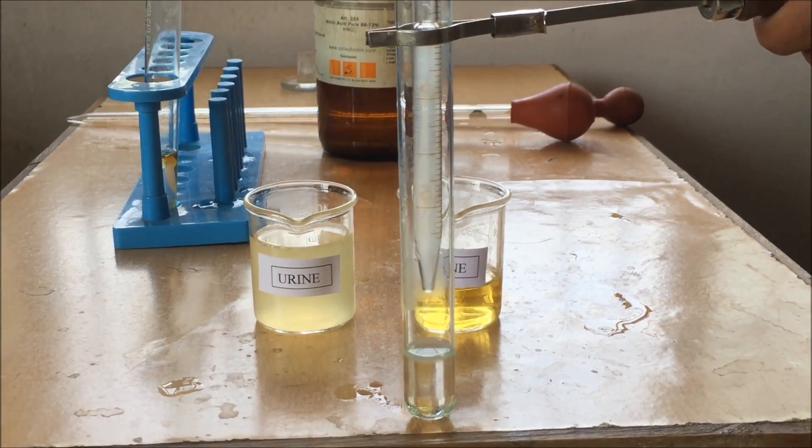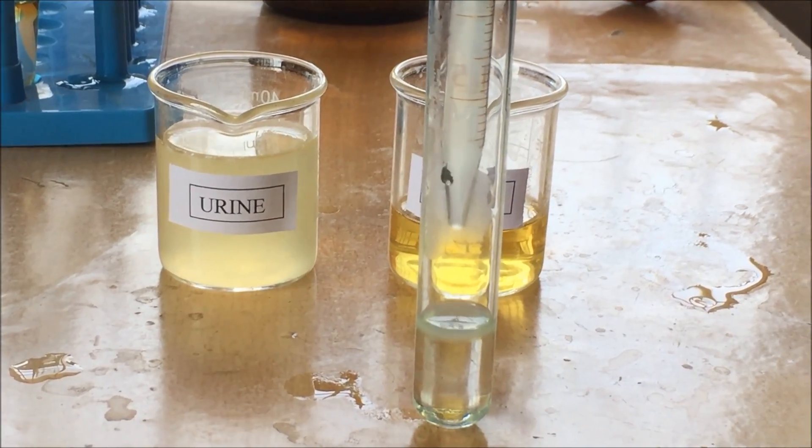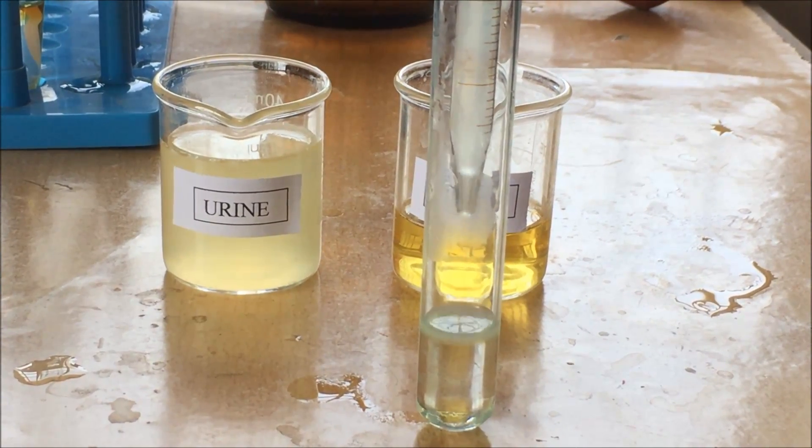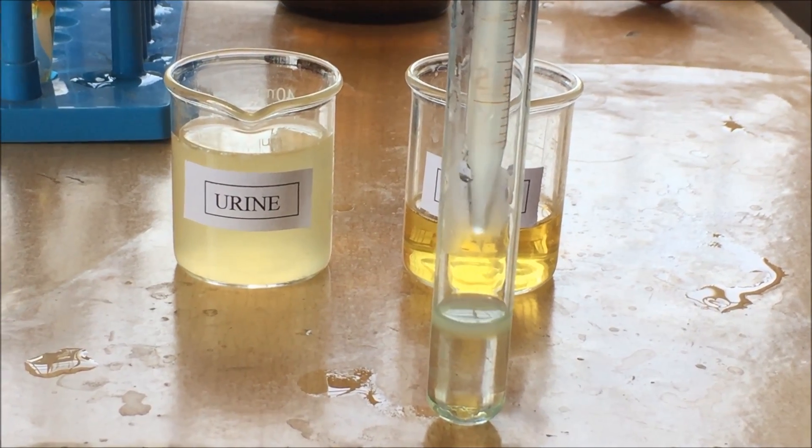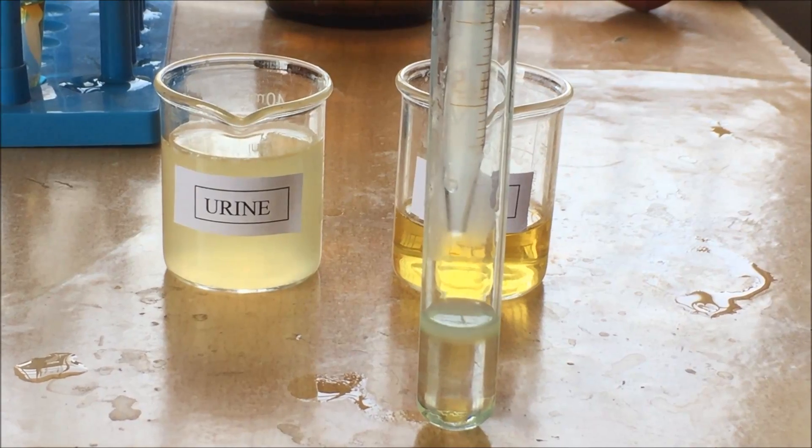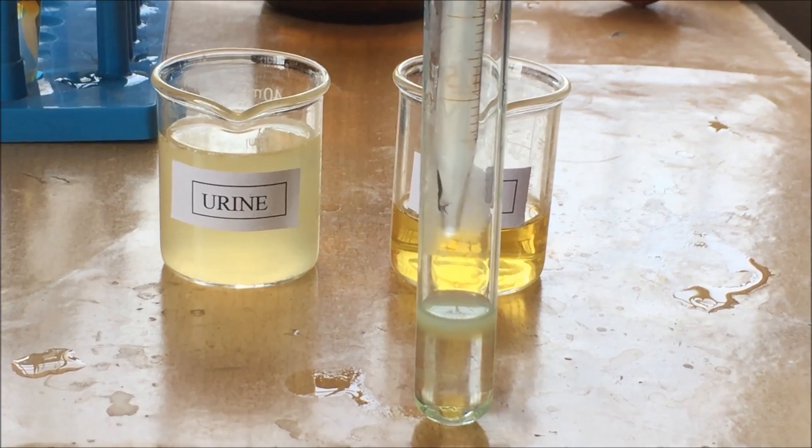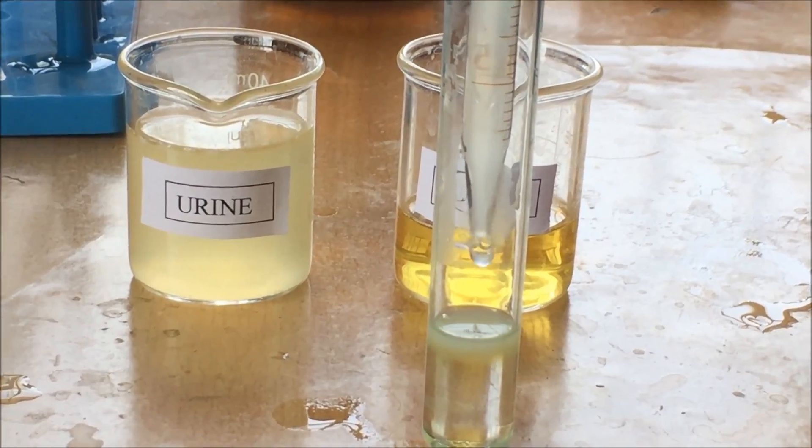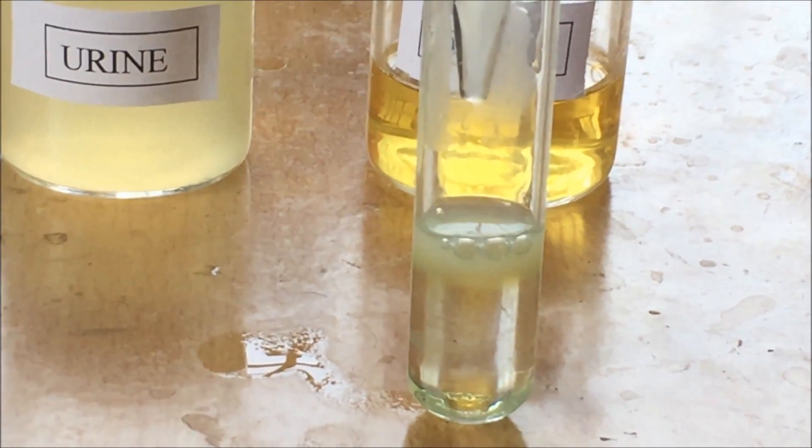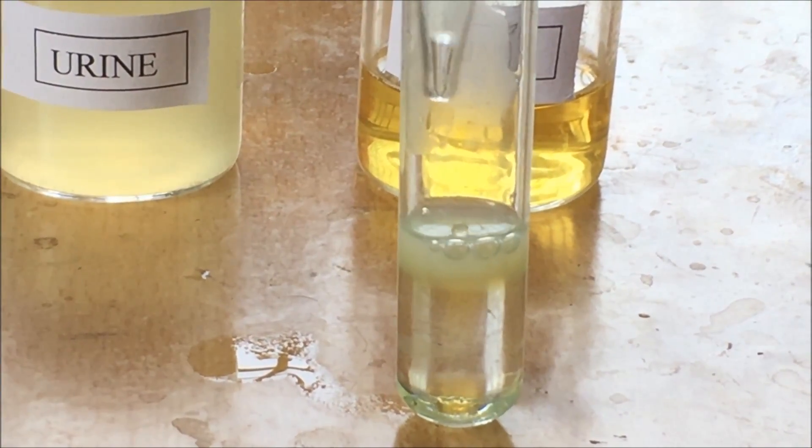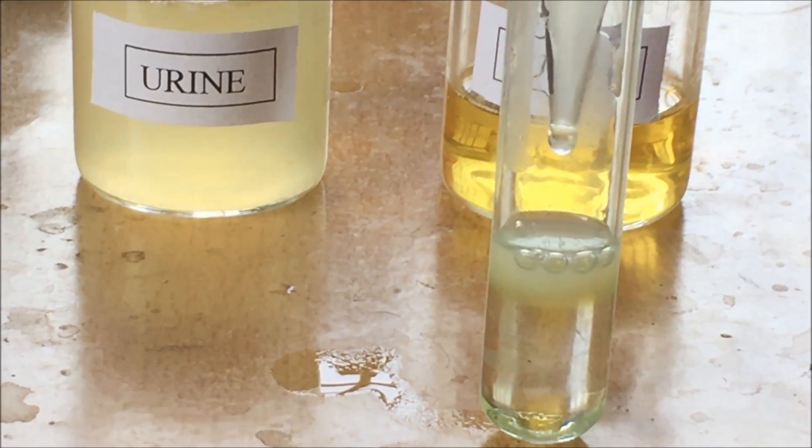I request you to please focus on both layers. As you can see when a drop of urine is added, there is a formation of a white ring over the surface of nitric acid. This is because there is a precipitation of protein, that is albumin protein in the urine sample, due to the interaction between concentrated nitric acid and the albumin. The formation of the white ring over the surface indicates the presence of albumin in the given sample.